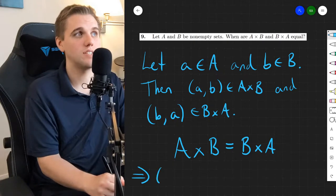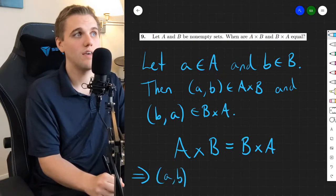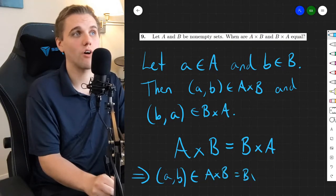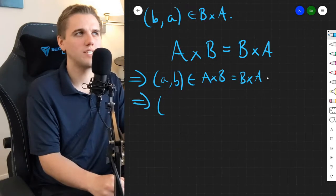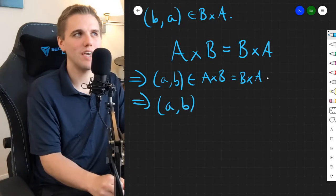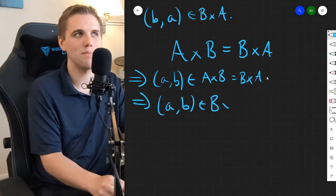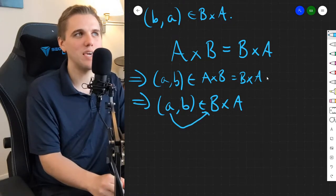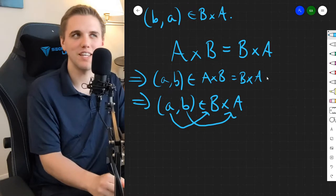So this means that (a,b) is in A cross B, which equals B cross A, which means that (a,b) is actually in B cross A. And so that means a is in B and b is in A.